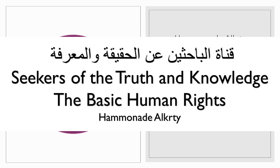The declaration consists of 30 articles affirming an individual's rights, currently known as the 30 Universal Declaration of Human Rights or the 30 basic human rights, including the right to life, right to education, right to organize, and the right to fair treatment, among other things.